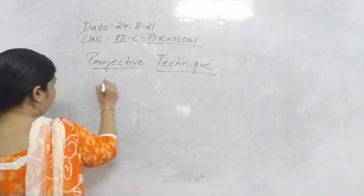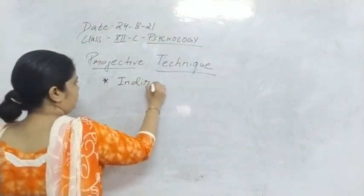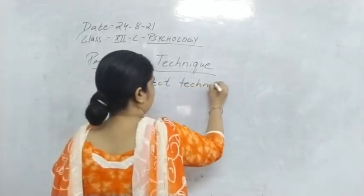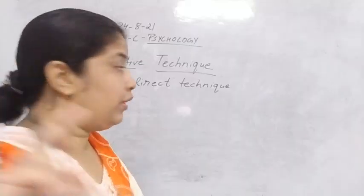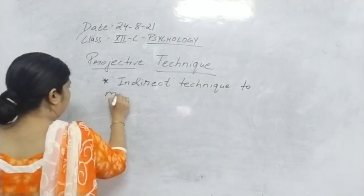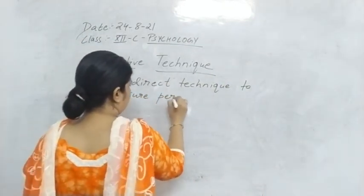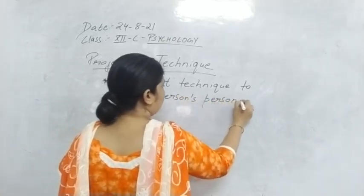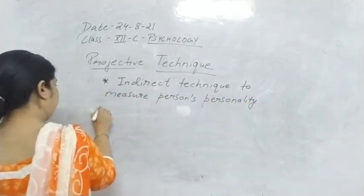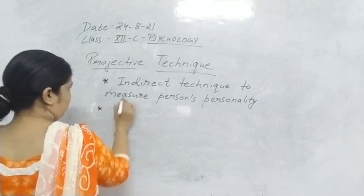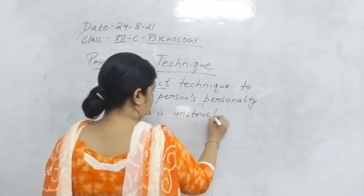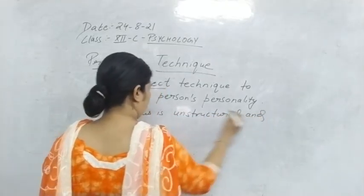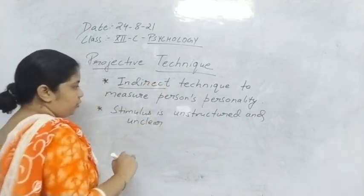I hope you understand that projective technique is an indirect technique — it is not a direct technique. It is an indirect technique for the measurement of the person's personality. So the key points we get: first point — indirect technique. Second point — stimulus is unstructured and unclear.